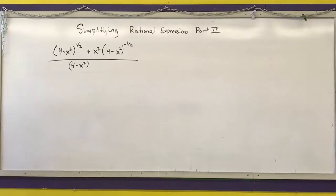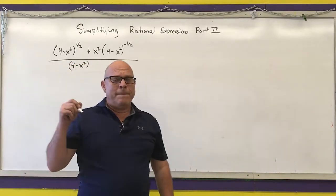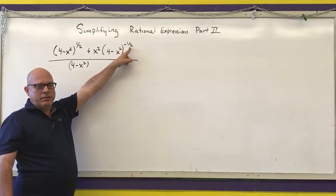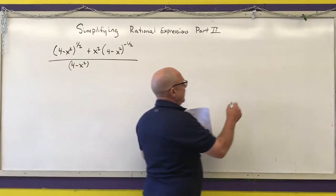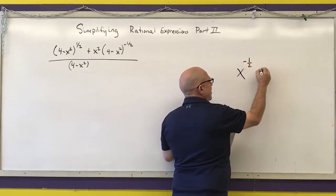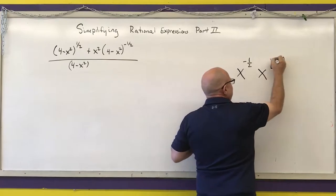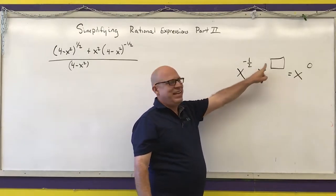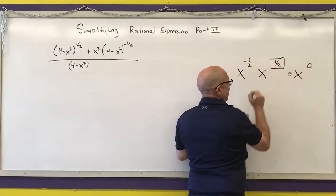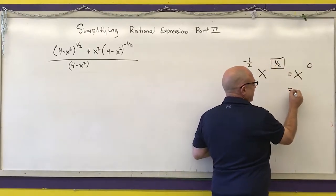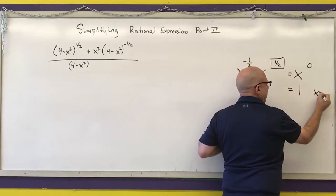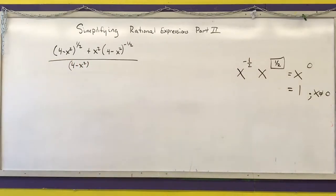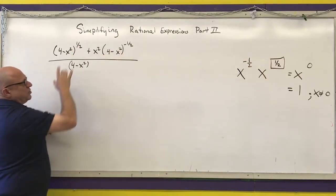What I'm going to do is multiply by what makes the lowest power a zero. So, if I had x to the negative one-half, what would I have to multiply that by to get x to the zero? When I multiply things together, I am adding my exponents, so I would multiply by one-half, and that would give me x to the zero. x to the zero is 1, as long as x is not equal to zero. That's the fact I'm going to use to simplify some of these.